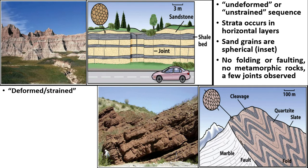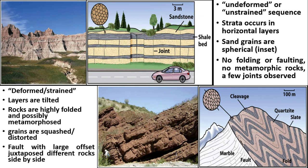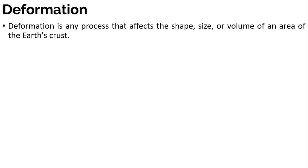In the second figure we can say that this is deformed or strained. As you can see, the layers are tilted, the rocks are highly folded and possibly metamorphosed. The grains are squashed or distorted, and lastly there is a fault with large offset that juxtaposes different rocks side by side. So deformation is any process that affects the shape, size, or volume of an area after it is stressed.